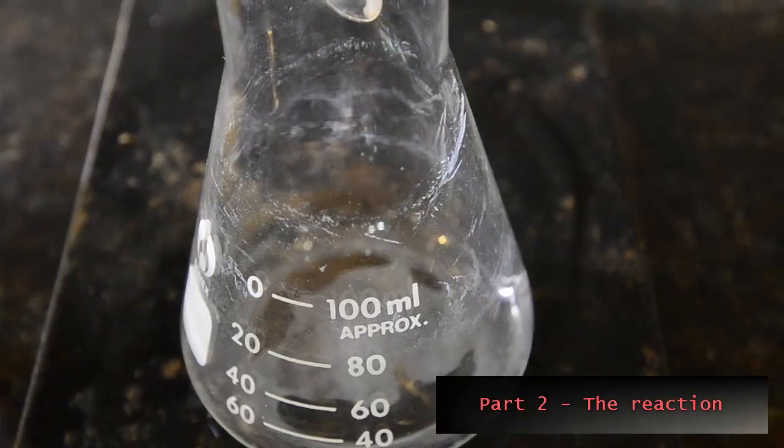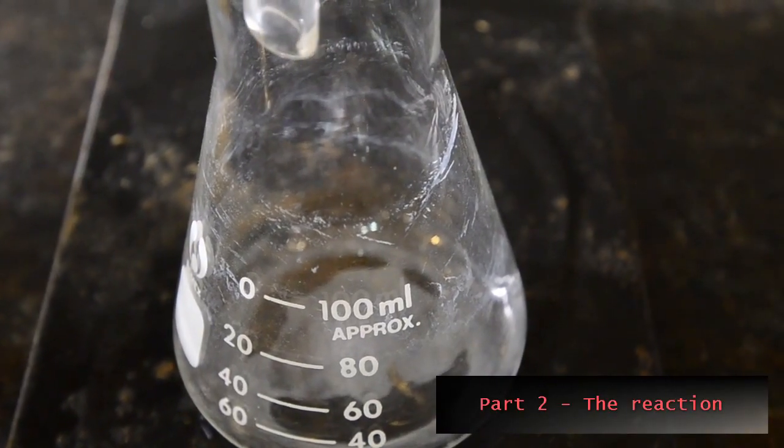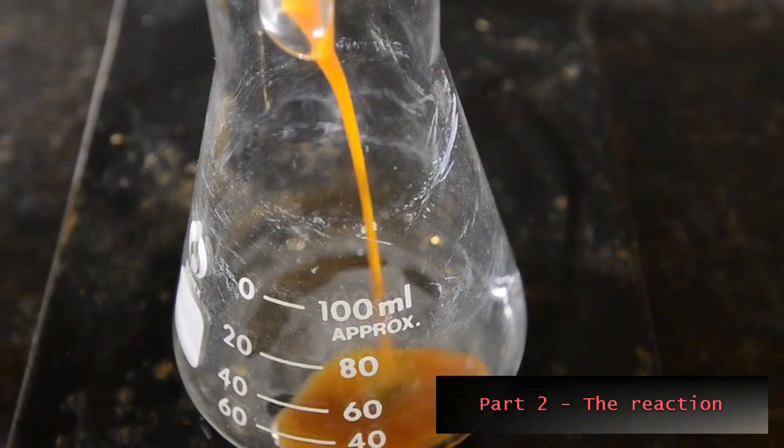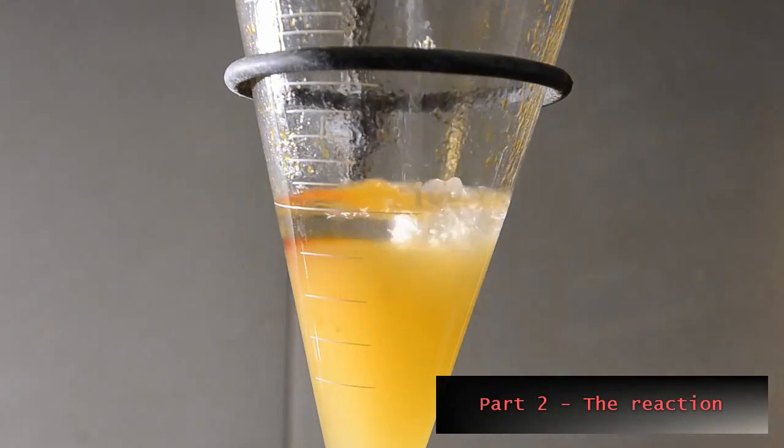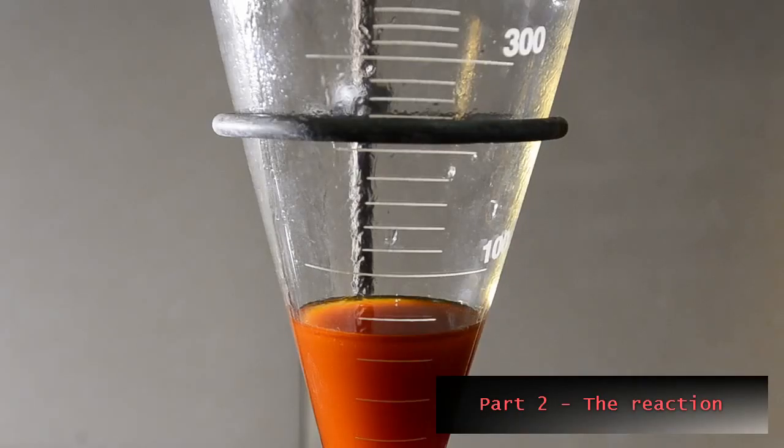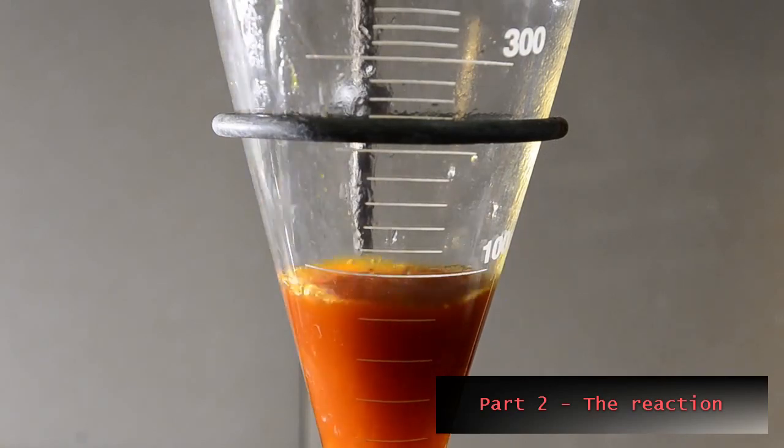Place the aqueous layer back into the funnel and then wash this with 50 milliliters of toluene. This will extract out any dissolved mandelonitrile. Separate the toluene layer and carefully dispose of the aqueous layer containing cyanide.